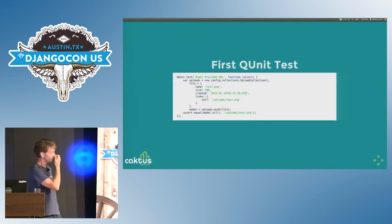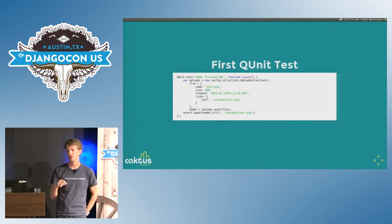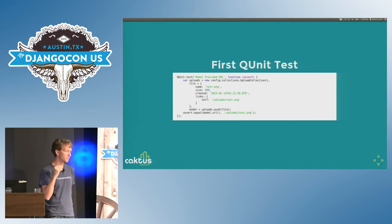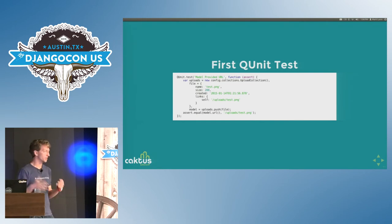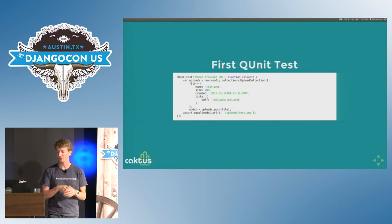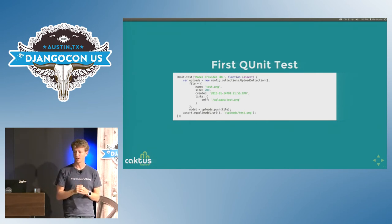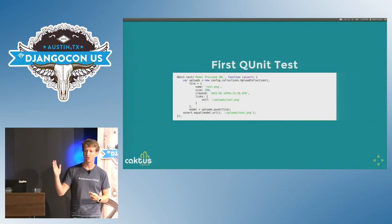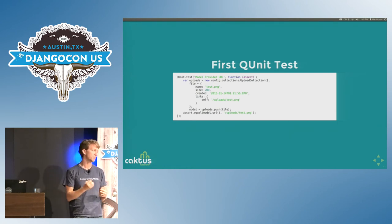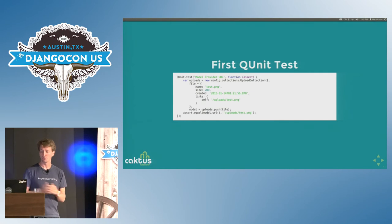Our first QUnit test uses QUnit.test, which names the test and takes the test function itself. The test function receives a single argument — the assertion pieces — which has all the assertion APIs you'd expect from XUnit: assert.equal, assert.ok, assert.notOk, assert.notEqual. In this case, I'm creating an instance of a Backbone model, similar to a Django model, and asserting that a method call — URL — returns the URL I expect. Pretty standard unit test: create an instance of a class, call one method, assert one thing.